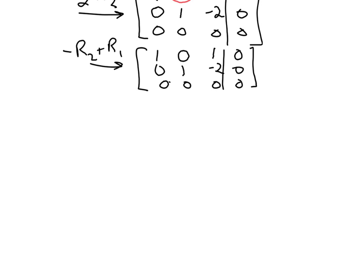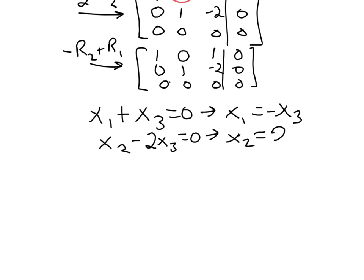And so now we just need to describe this solution set. So that first row is telling us that x1 plus x3 is equal to 0, which means x1 is equal to negative x3. The second row is telling us that x2 minus 2x3 is equal to 0, which if you move over, so if we solve for x2, that's equal to 2x3.